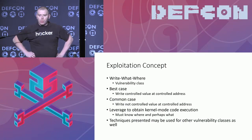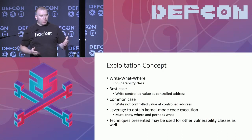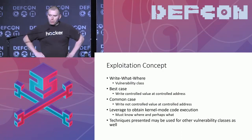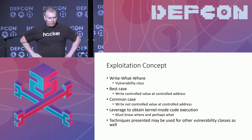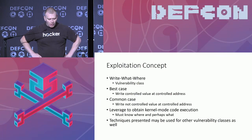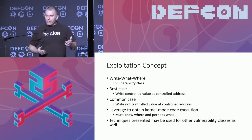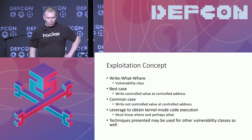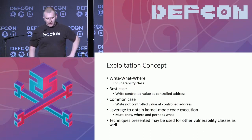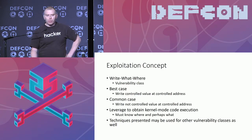So, write-what-where vulnerability. The best case of this vulnerability class is that you can write a controlled value at a controlled address somewhere in the kernel. But a more commonly found bug will most likely write a non-controlled or semi-controlled value at a controlled address in the kernel. So once that's possible we have to leverage this write in some way to get kernel mode code execution, and the most important part is we have to know where to write. These techniques are for write-what-where vulnerabilities but they can be used for other vulnerabilities as well, like pool overflows or use-after-free.